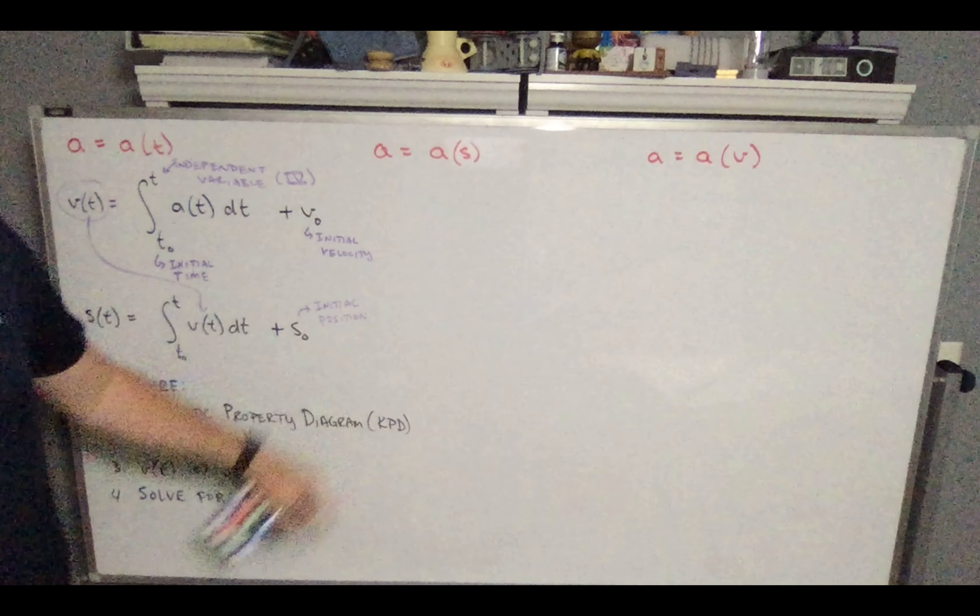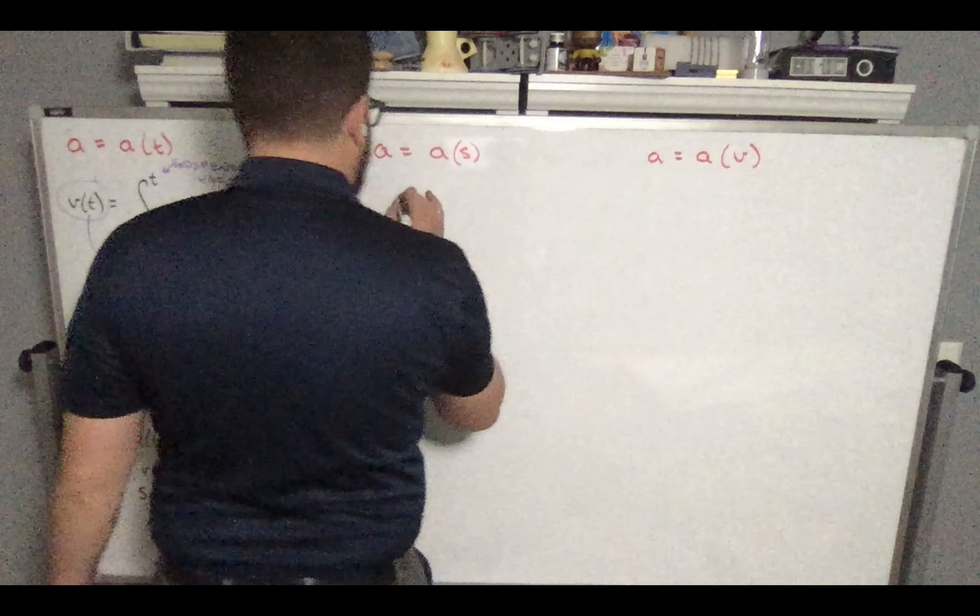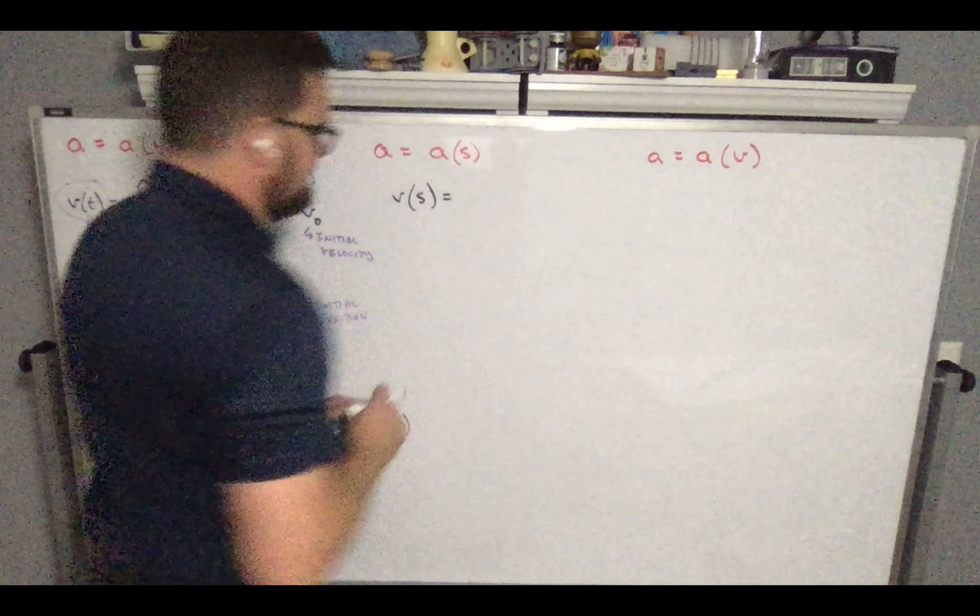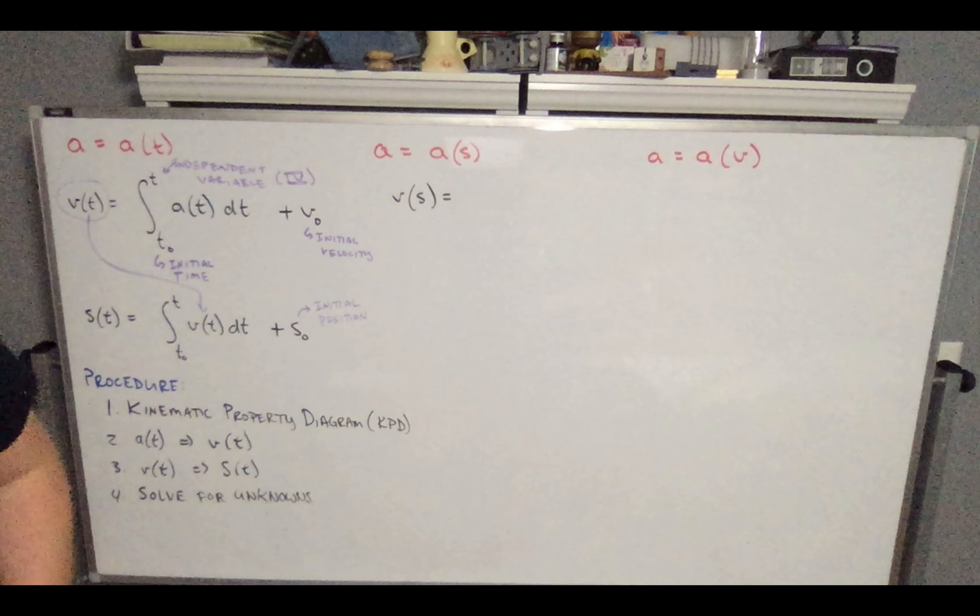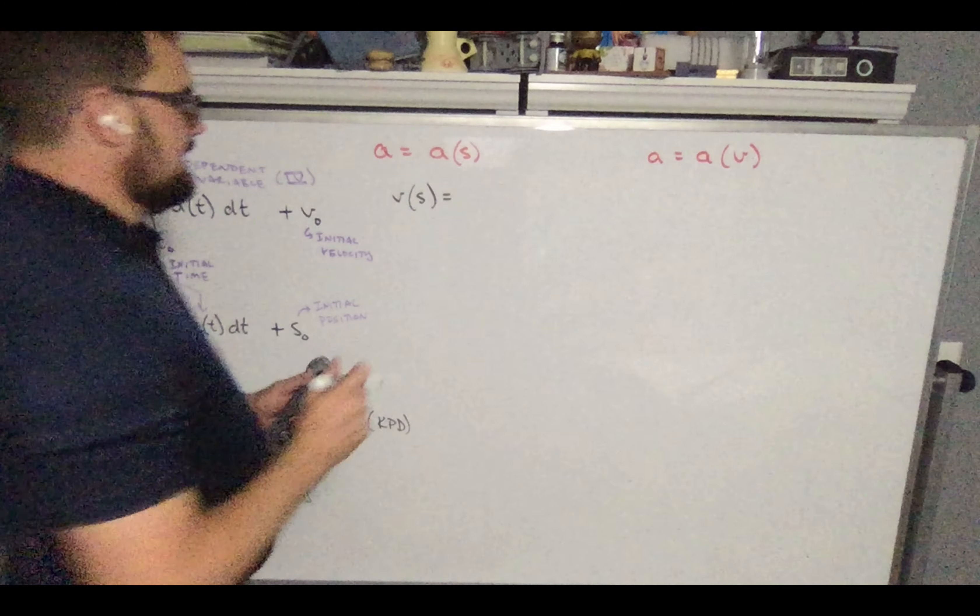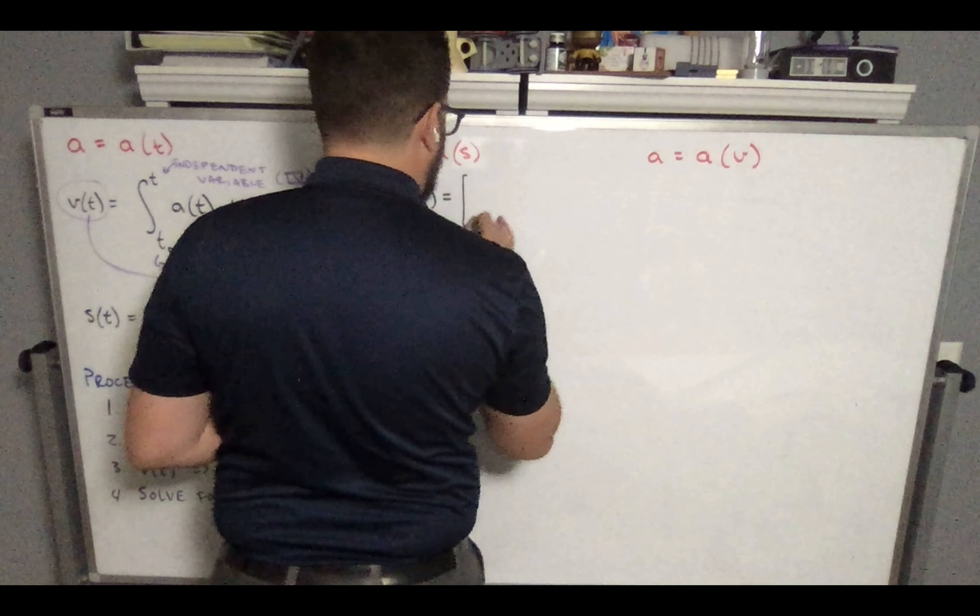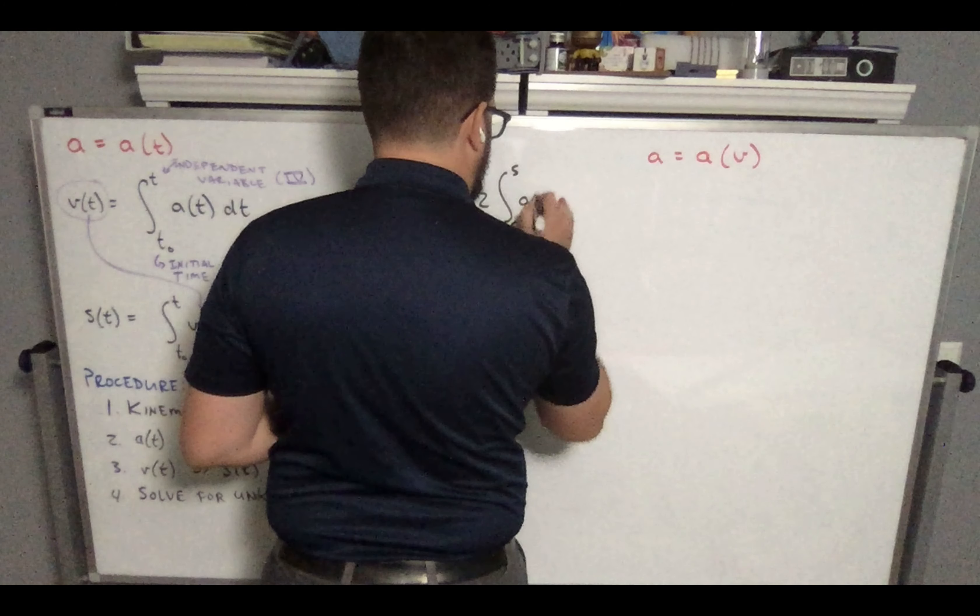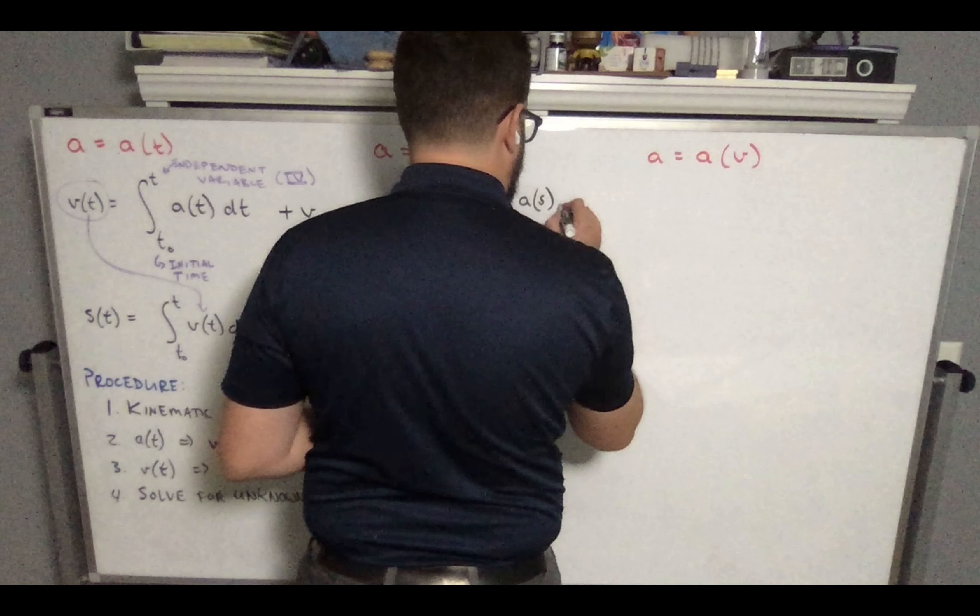When we think about acceleration as a function of position, in this case, we're going to want to be able to calculate our velocity as a function of position. And this equation is going to look like this. So again, I'm not doing the proof here. I'm just illustrating it for you. You probably want to add this to your FE reference handbook.